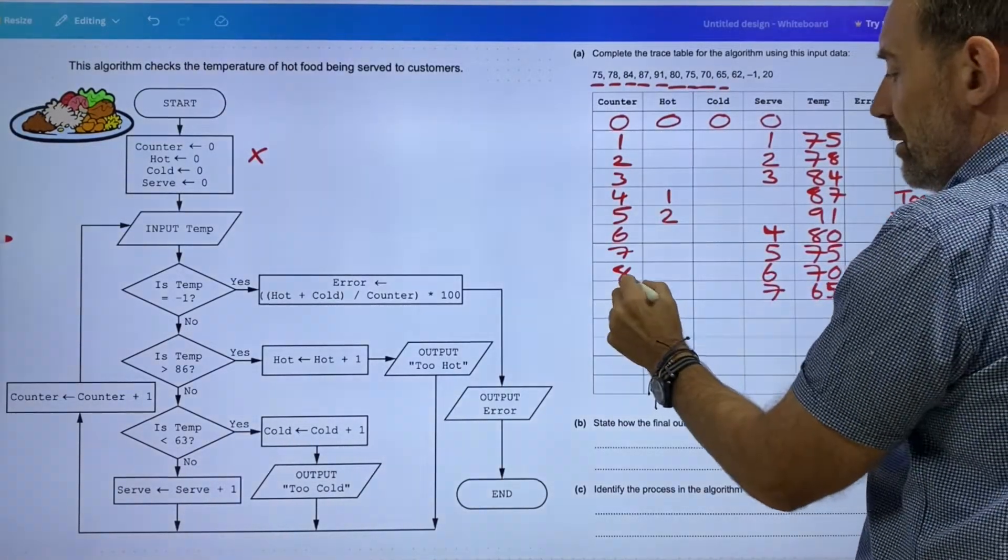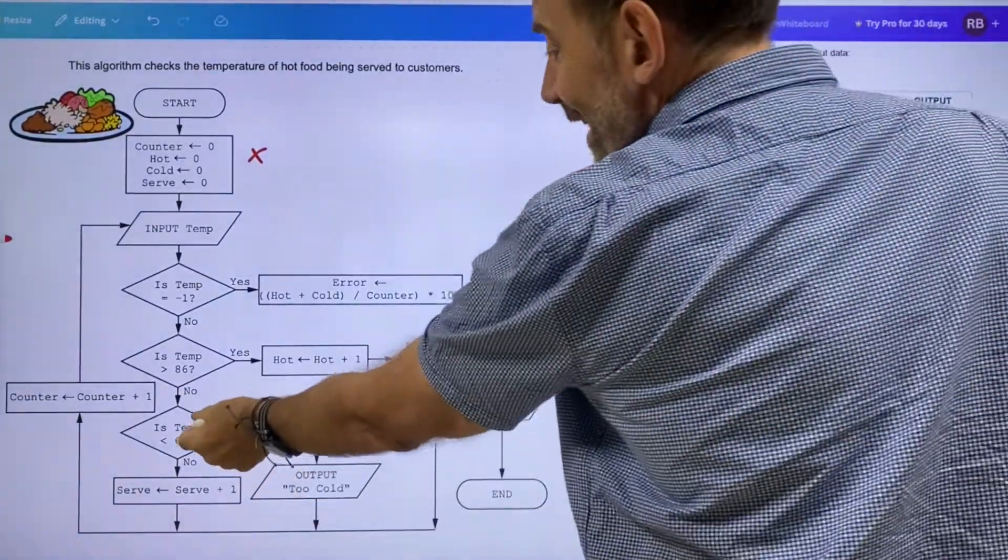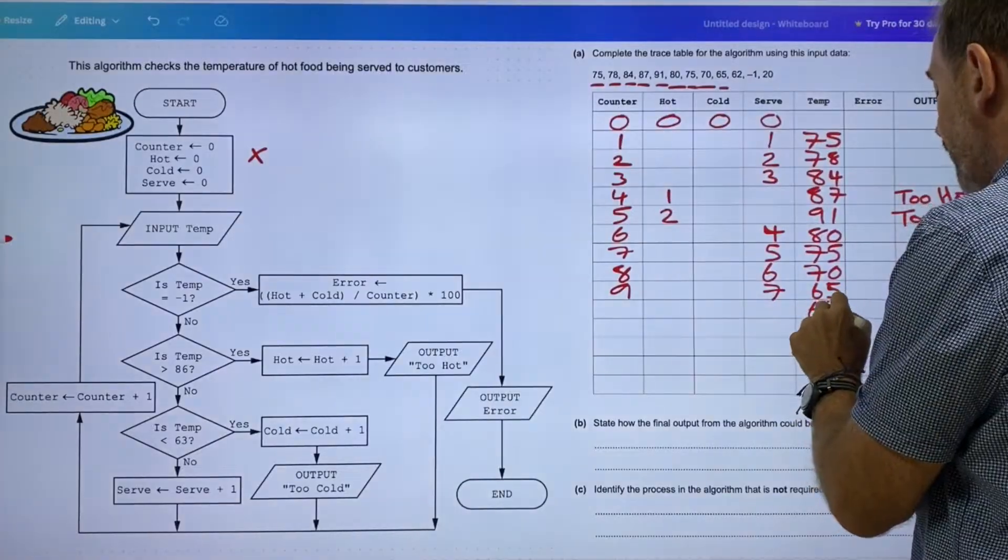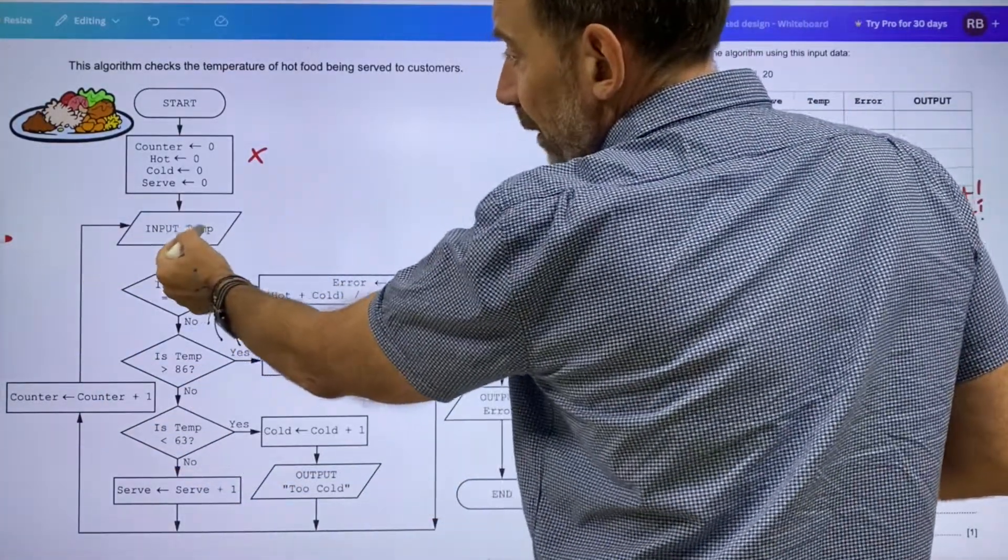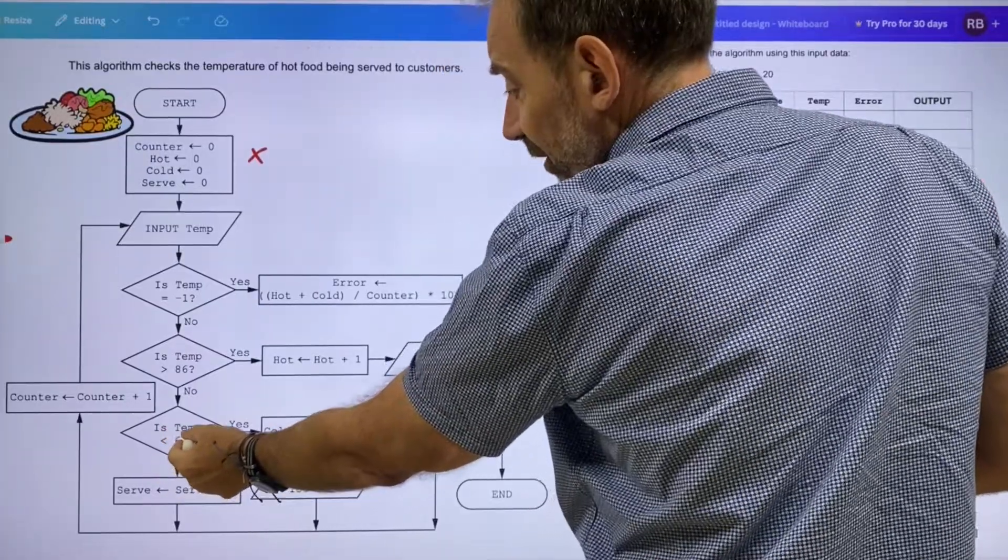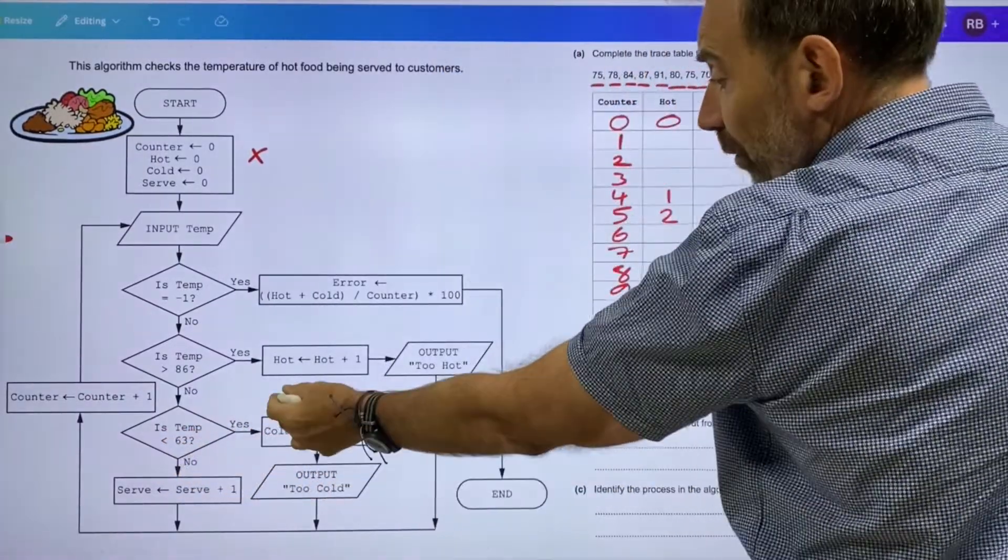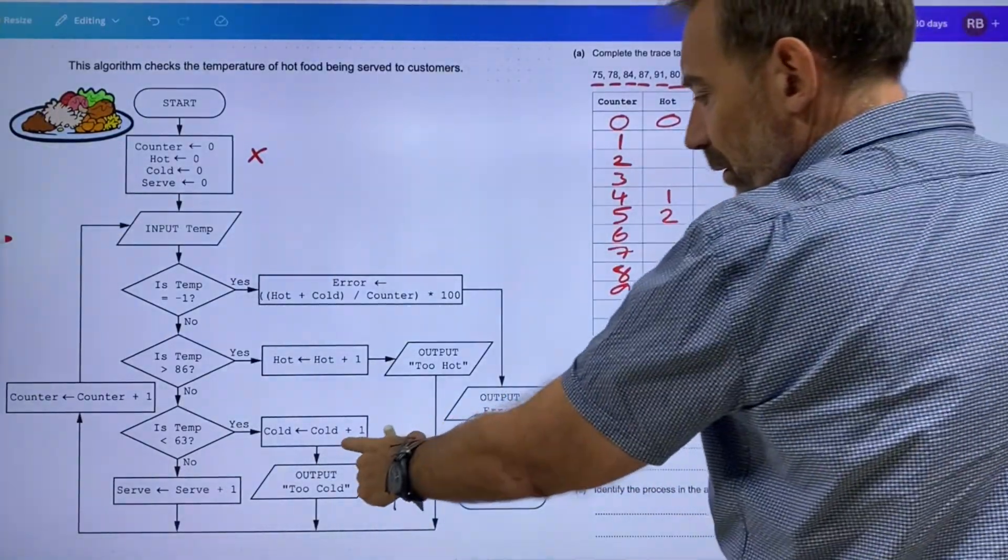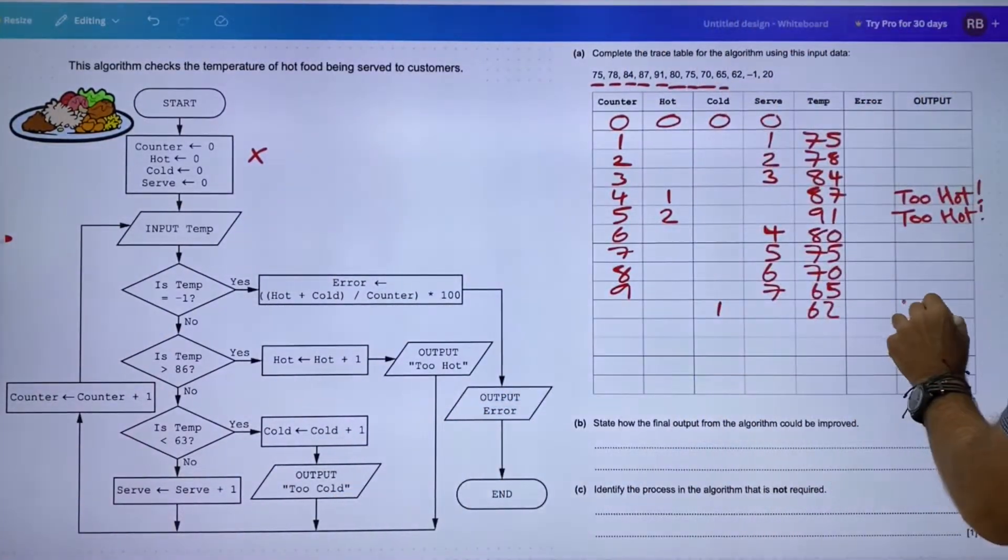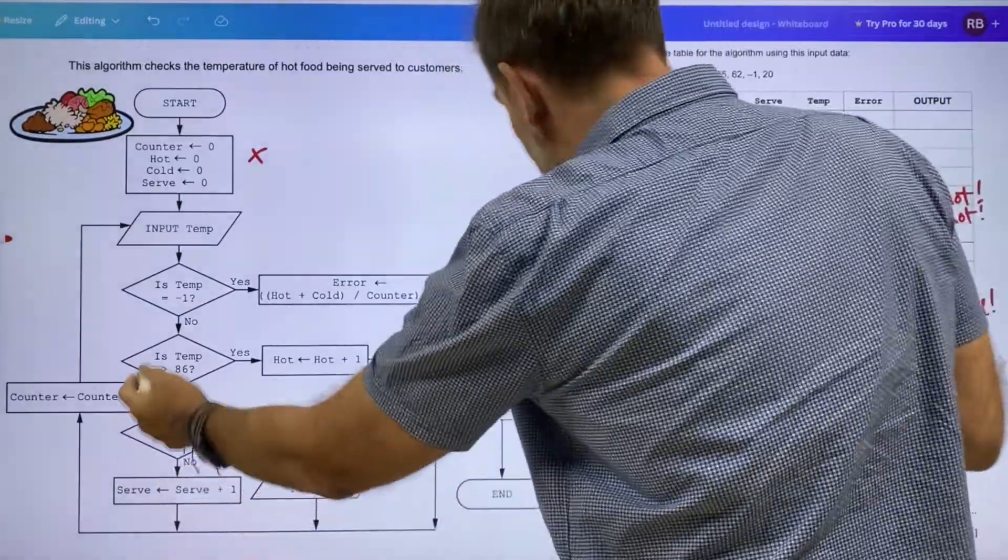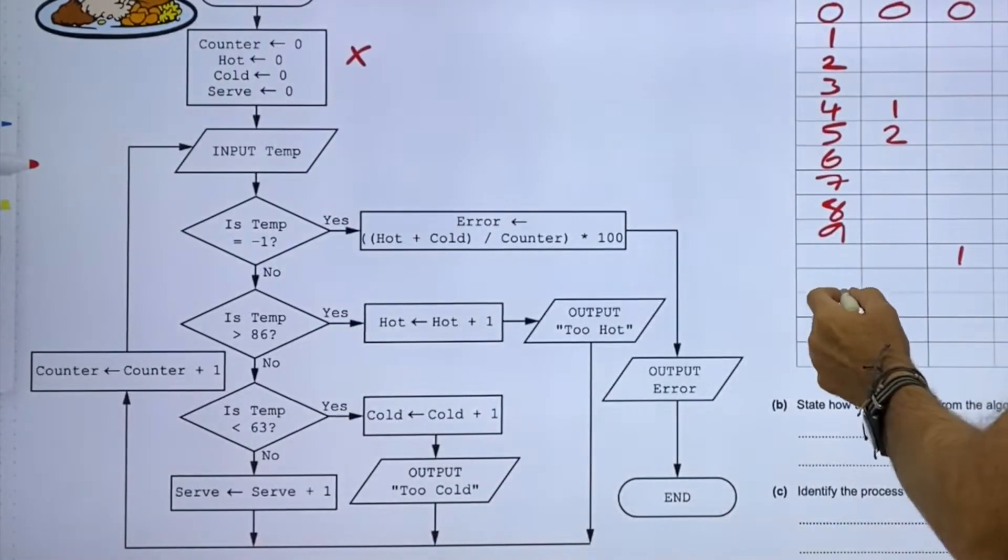We're on 62. 62 is less than 63, so let's put it in here. Input the temperature down to here. Is the temperature less than 63? Yes it is. So yes, cold equals cold plus one. Output 'too cold'. Counter equals counter plus one—10.